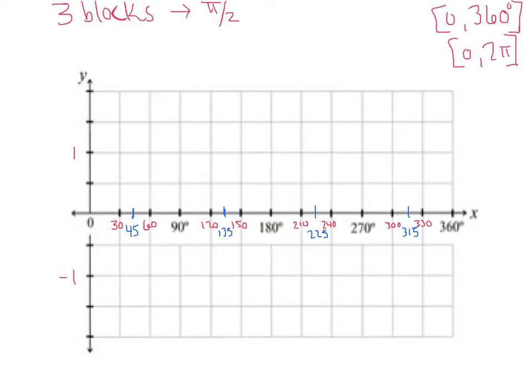Tangent has a really special feature: it has two vertical asymptotes on this domain. A vertical asymptote is like an invisible dotted line on your graph — invisible on the calculator, but we must draw them in. That's the first thing I always draw on the tangent graph: vertical asymptotes at 90° and 270°. Also helpful: the tangent of 0° is 0, the tangent of 180° is 0, and the tangent of 360° is 0.